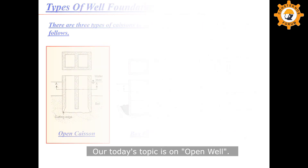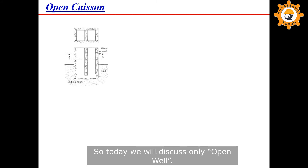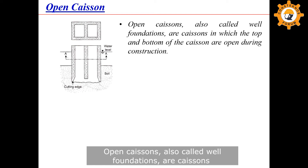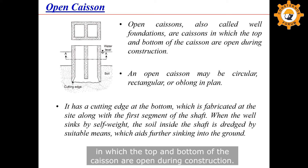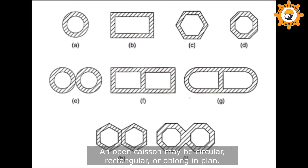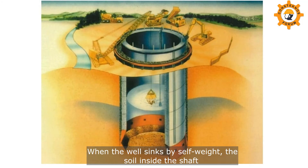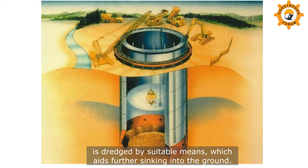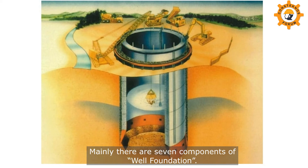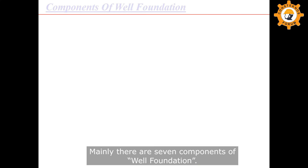Our today's topic is on open well, so today we will discuss only the open well. Open caissons, also called well foundations, are caissons in which the top and bottom are open during construction. An open caisson may be circular, rectangular, or oblong in plan. It has a cutting edge at the bottom which is fabricated at the side along with the first segment of the shaft. When the well sinks by self-weight, the soil inside the shaft is dredged by suitable means, which aids further sinking into the ground. Mainly, there are seven components of well foundations, and we will discuss each component one by one.